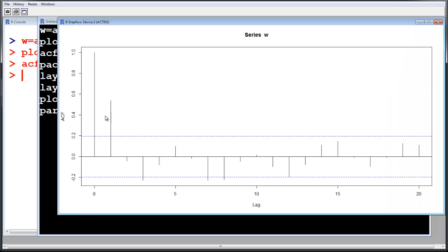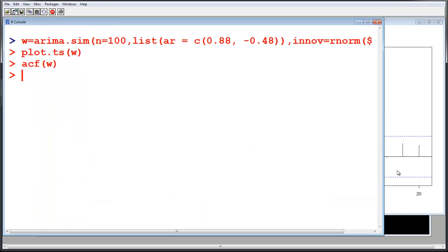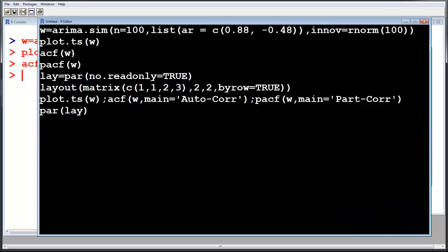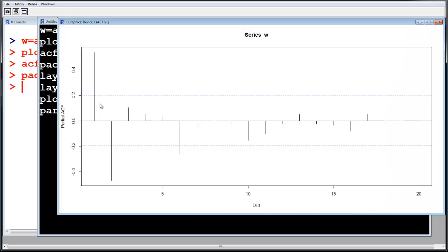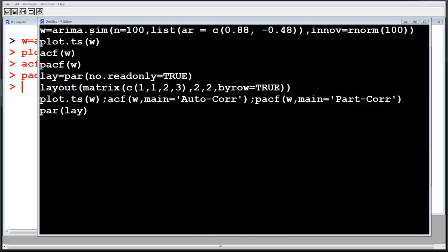Let us run the autocorrelation function. This is the plot for the autocorrelation function ACF. Now we should run the most important function, that is PACF. You see there are two lags which are important. Everything else is not significant. This one is showing as significant but if I increase the frequency this will disappear.